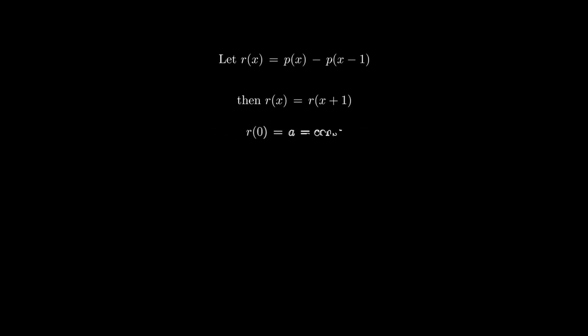We know for r(x) minus a, where a is some constant, regardless of the value, r(1), r(2), r(3), etc., all equal to a. This means r(x) - a has infinitely many roots, because all positive integers, in fact all integers, are roots to this equation.